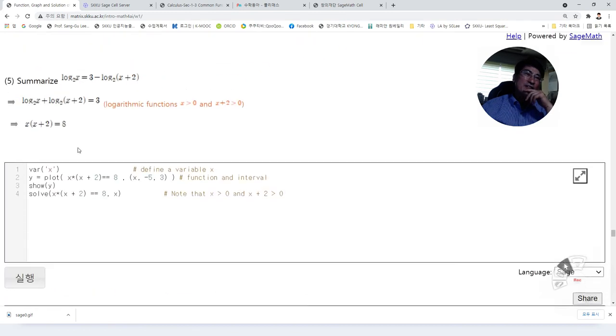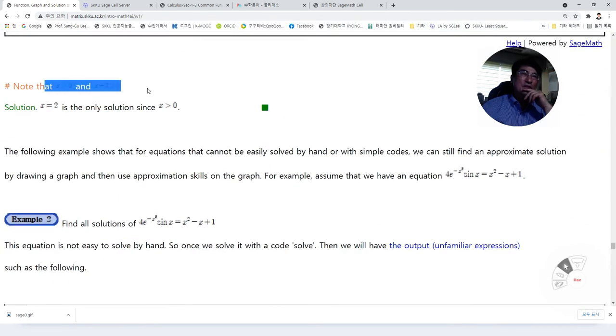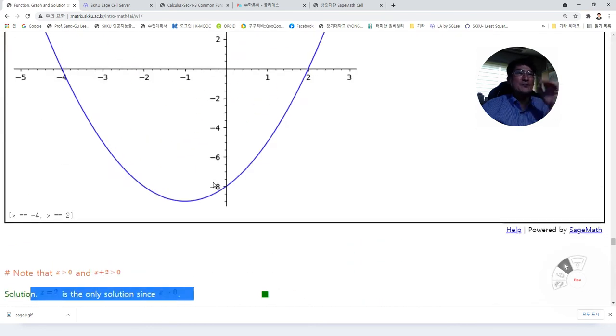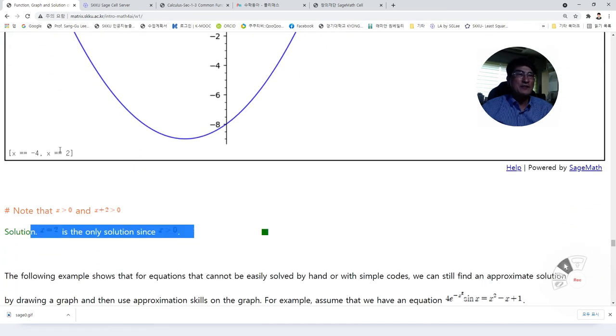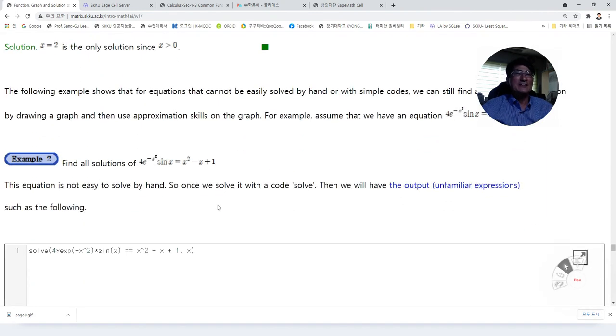But this is a log function. So we know x is bigger than 0 and x plus 2 is bigger than 0. So we know this one. So from this solution, x is equal to minus 4, it does not satisfy this. So this one is the only solution that we have. So we simplify it and we draw the graph. Then we can have the solution easily without any confusion. Then we use the condition from the given equation. Then we can exclude the false information. Then we will have the only solution of the above equation.